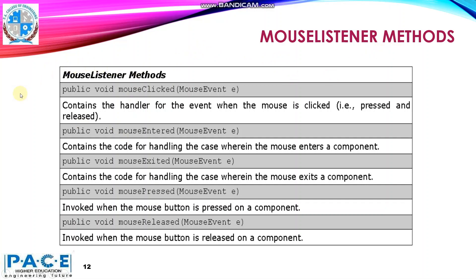The MouseListener class provides a number of methods. The method mouseClicked contains the handler for the event when the mouse is clicked — that is, pressed and released. It also provides the method mouseEntered, which contains the code for handling the case wherein the mouse enters a component. The method mouseExited contains the code for handling the case wherein the mouse exits a component. The mousePressed method is invoked when the mouse button is pressed on a component, and mouseReleased is invoked when the mouse button is released on a component.